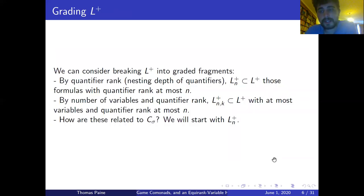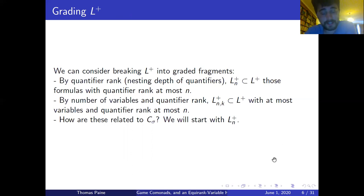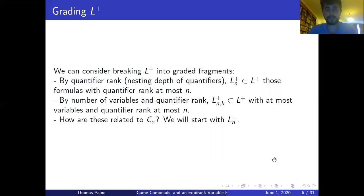We're interested in seeing how this picture works for different fragments of first-order logic. We can break down first by quantifier rank — the nesting depth of quantifiers in a sentence — and also by the number of variables. With a limited number of variables you can re-use variable names, which means you forget the previous binding, giving a limited-memory resource in addition to limited quantifier rank.